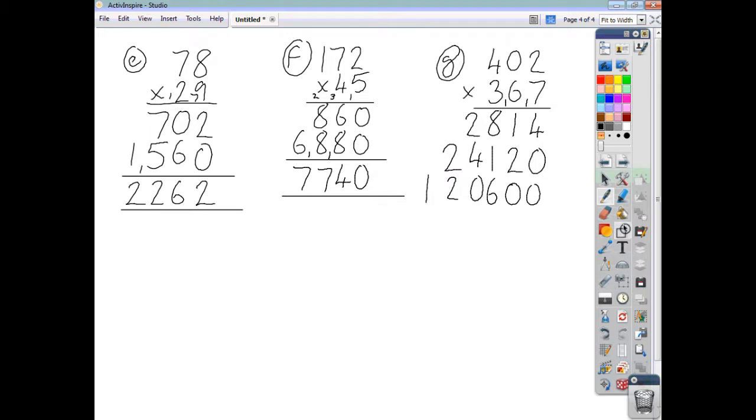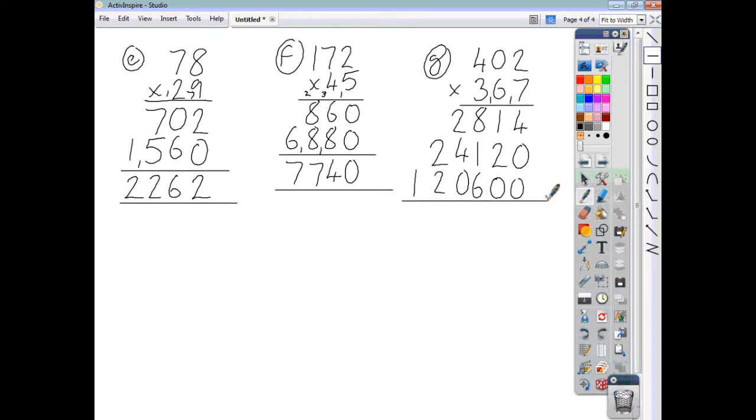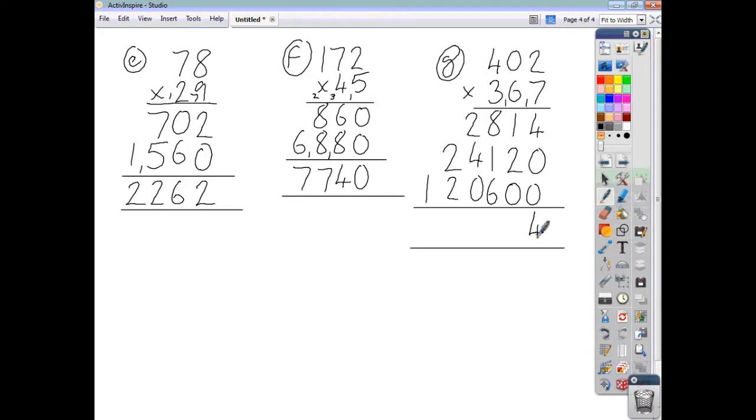So be careful that you've got everything in line. And add it all up. 4 add 0, add 0 is 4. 1 add 2, add 0 is 3. 8 add 1, add 6, that's going to be 15. Write the 5, carry the 1. 2, 4 and 1, that makes 7. 2, 2, that makes 4. So 2 add 2 is 4. 1 add nothing is 1. So we end up with an answer of 147,534.